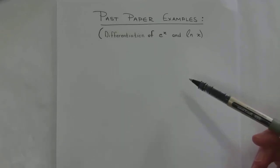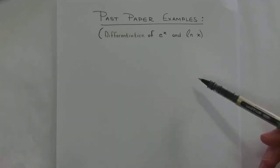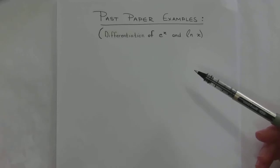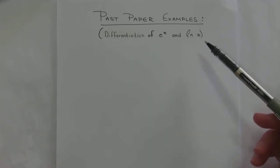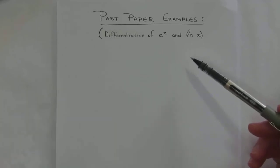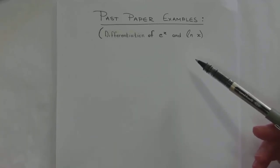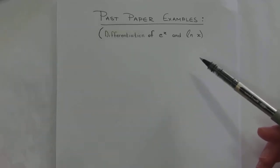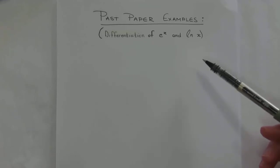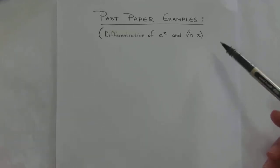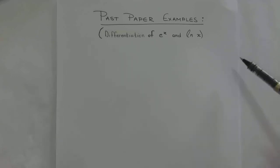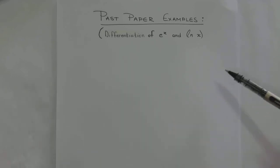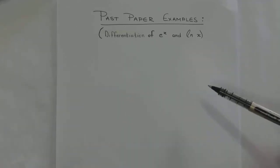They actually changed the syllabus in 2019, so 2019 was the first year they actually asked this differentiation of e to the power of x and ln of x in the final exam. So unfortunately there are not a lot of past paper examples to do. I went and looked just at the 2019 paper and we're going to work through those examples, but I will also find some additional examples, not necessarily from past papers, just so you can practice.